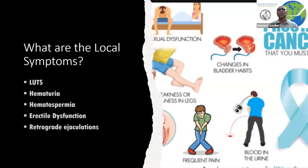What are these local symptoms? The most common is obstruction due to enlarging size. These symptoms include hesitancy, poor stream, incomplete voiding, and increased frequency. Hematuria — blood in the urine — is much more common with malignancies. Hematospermia, erectile dysfunction, and retrograde ejaculation also occur because of changes in the local area caused by the malignancy.